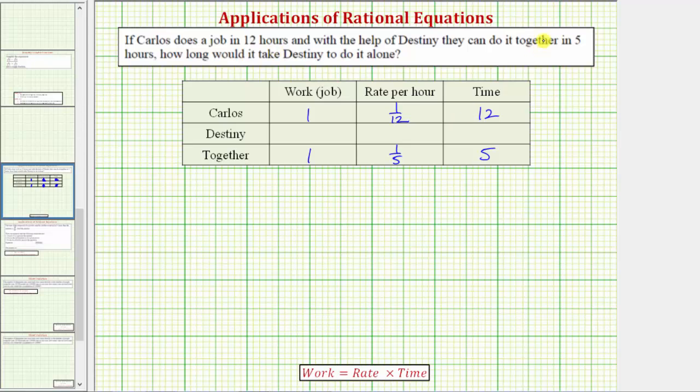The question is to determine how long it takes Destiny to complete the job alone. So Destiny can complete one full job in an unknown amount of time, let's let x equal the number of hours it takes Destiny to complete the job alone, which means her rate is going to be one over x. Again if it takes Destiny, let's say eight hours, her hourly rate is one-eighth of the job per hour. If it takes her two hours, her hourly rate would be one-half of the job per hour.